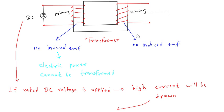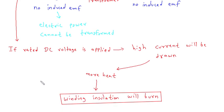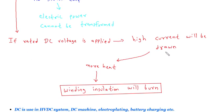And also there is no induced EMF in secondary winding of transformer. If the rated DC voltage is applied, high current will be drawn. Due to high current, more heat will be generated. Due to more heat, winding insulation will burn.